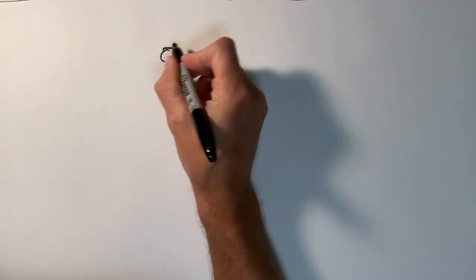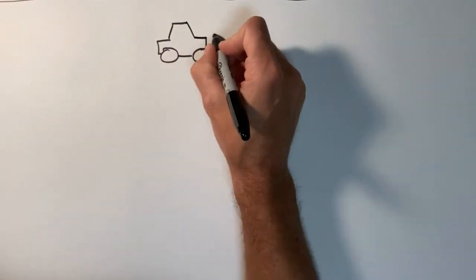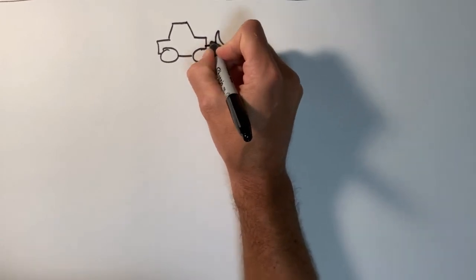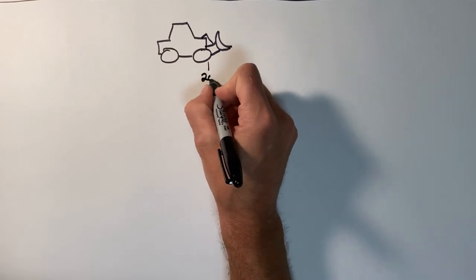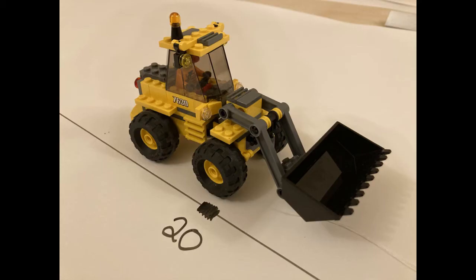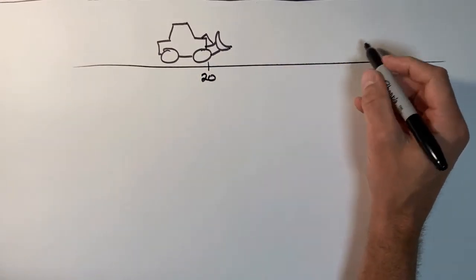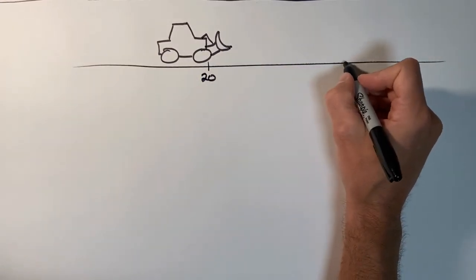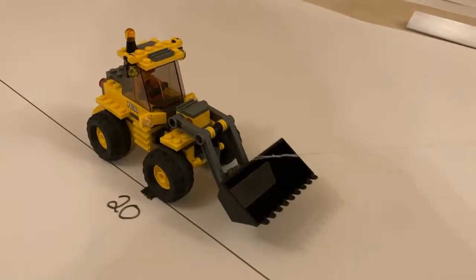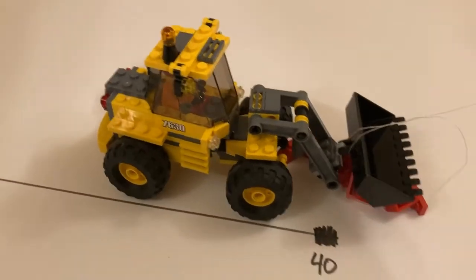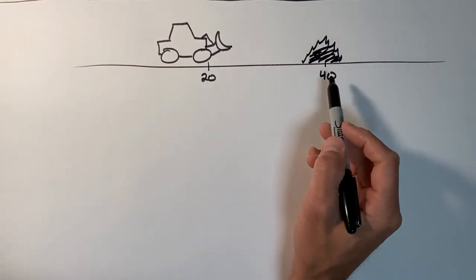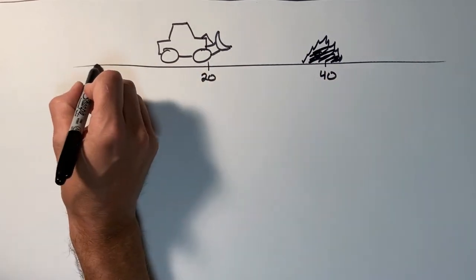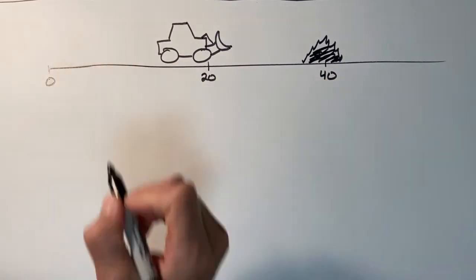For our last example, we're going to look at a bucket loader. We're going to take this bucket loader and we're going to start with this at a position of 20. We're going to have this bucket loader go pick up some rubble at a position of 40, and then it's going to take that rubble and bring it all the way back to a position of zero.